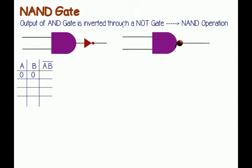The truth table of a NAND gate is shown here. The output is the whole bar of A dot B. When A and B are both 0, the output is 1. When A is 0 and B is 1, the output is 1. When A is 1 and B is 0, the output is 1. When both A and B are 1, the output is 0.